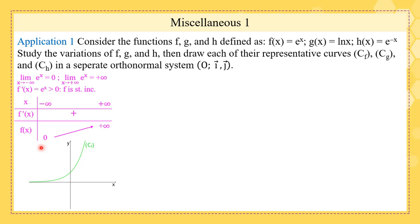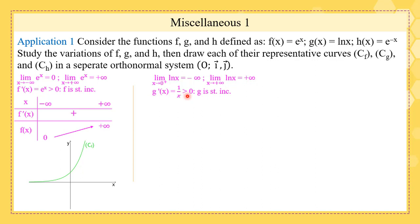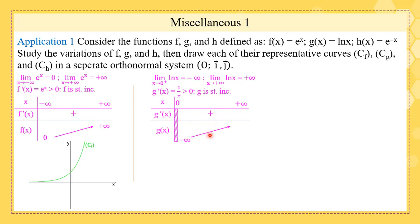For g, the limit at zero⁺ of ln(x) is negative infinity and the limit as x tends to plus infinity is plus infinity. g'(x) = 1/x, which is strictly positive because x is always strictly greater than zero, so g is strictly increasing. The domain is (0, +∞); g' is positive so g increases from negative infinity to positive infinity.